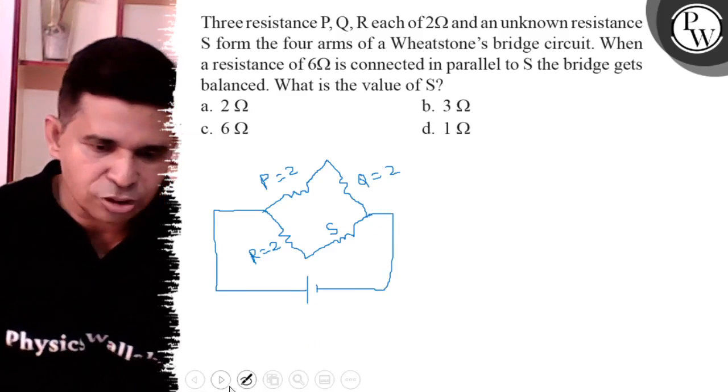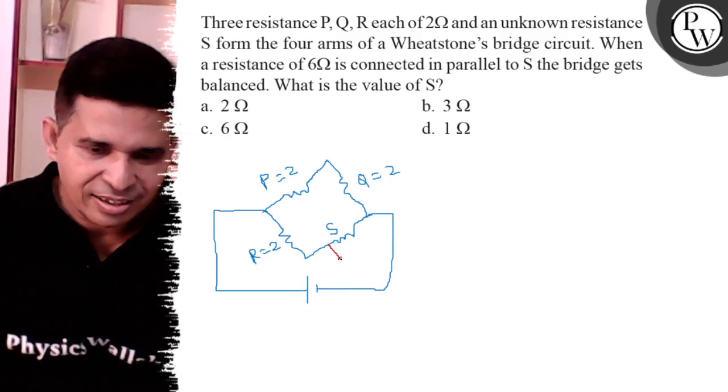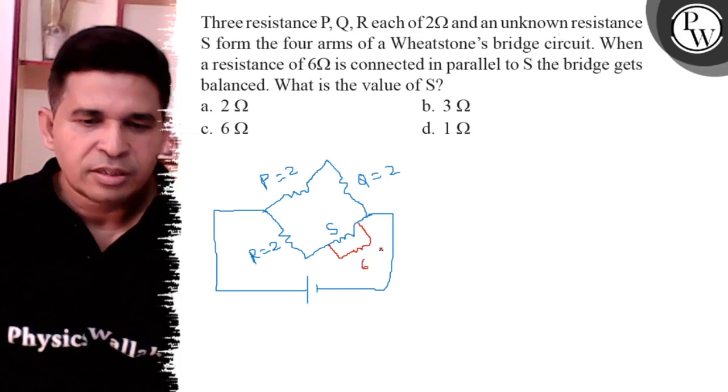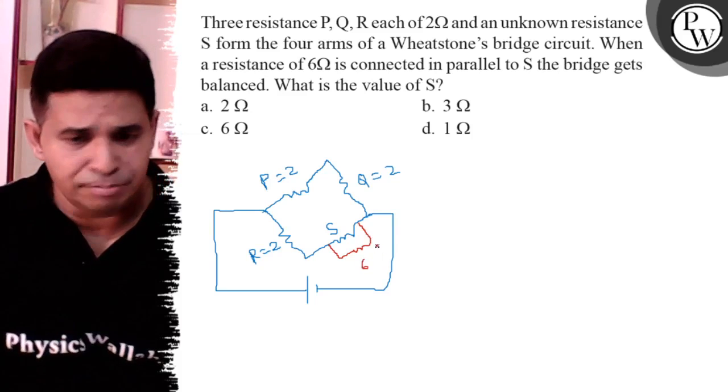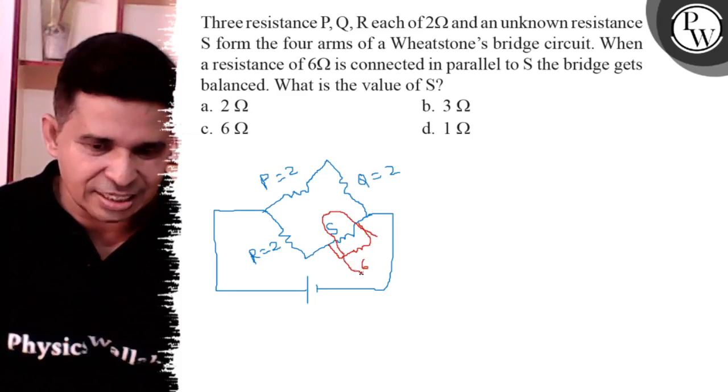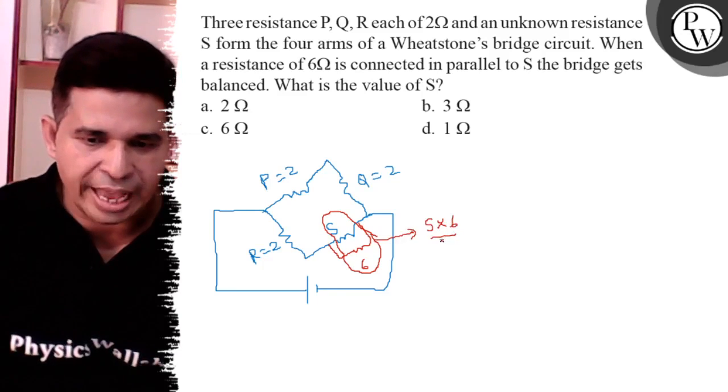Now, a resistance of 6 ohm is connected in parallel to it. After connecting it, the bridge is balanced. So what is the net resistance of that arm? It is S into 6 upon S plus 6.